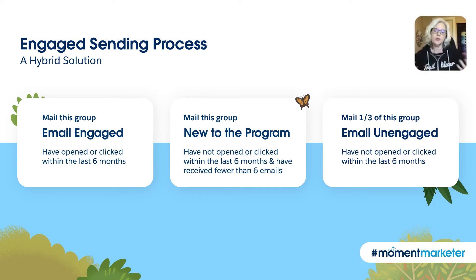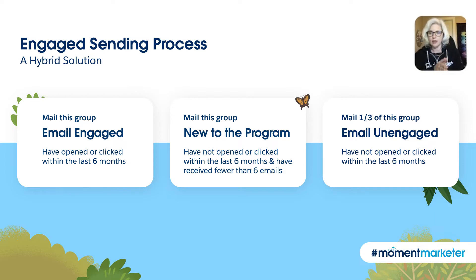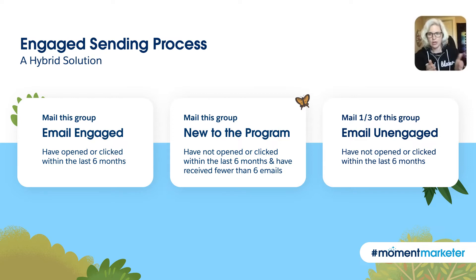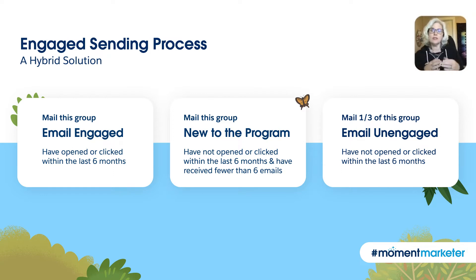In this case, we used an unengaged metric of haven't opened or clicked an email in the last six months, but that's because of the cadence of this particular client. The unengaged group needed to be mailed less frequently, but what we wanted to do was take one third of them and seed them into every send. We used the last send date to make sure that these people had essentially a quarter between every one of their sends.